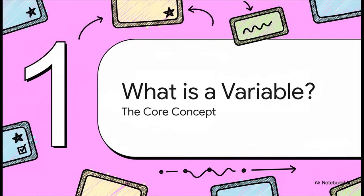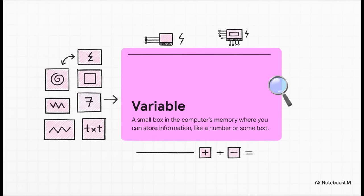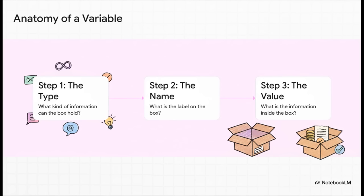All right, first up, what is a variable? Let's get right into the core concept. The easiest way to picture a variable is to just think of it as a little box, a box that lives inside the computer's memory. You can put a piece of information in it, like a number or some text, slap a label on the outside, and boom, the computer will remember it for you. And every single one of these boxes has three parts.